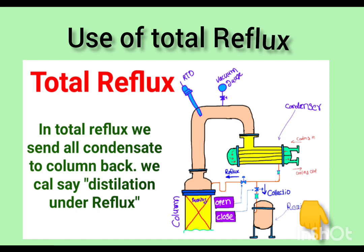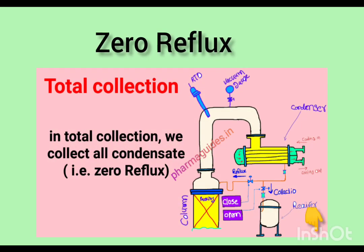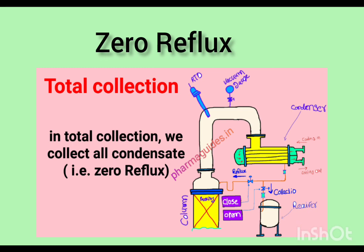Let's discuss the third type of reflux: zero reflux, or total collection. In this type, no liquid is returned to the column. If separation is very easy, then we use the zero reflux concept. If the column packing or trays are sufficient for separation, then we don't need to use reflux and we start 100% collection.